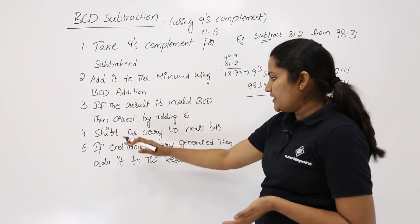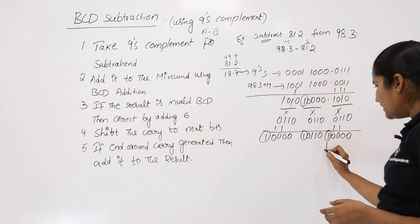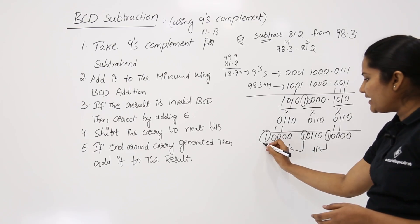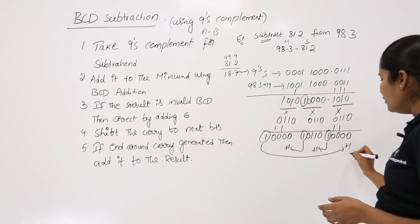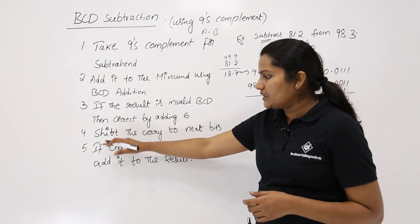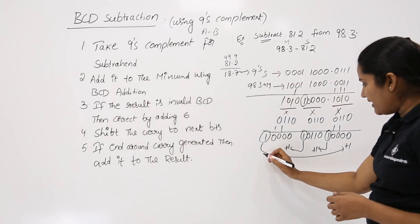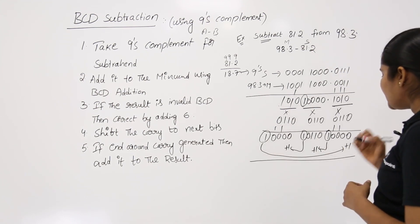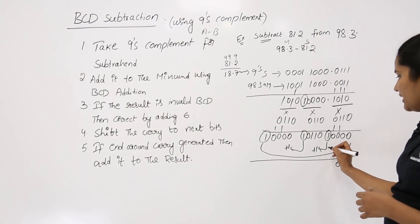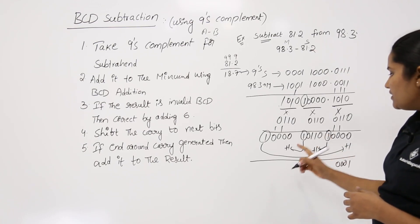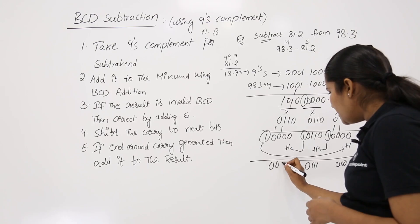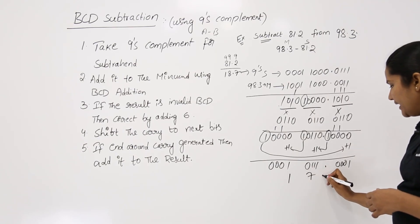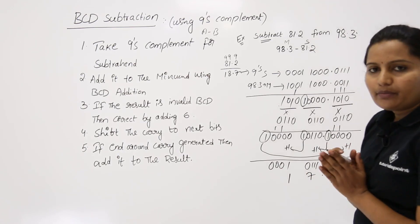Now go to the fourth step: shift the carries to the next bits. Add each carry to the corresponding next bit. Whatever end-around carry is present, add it to the last result. After propagating all carries and adding the end-around carry, the final result is 17.1. This is the BCD subtraction result.